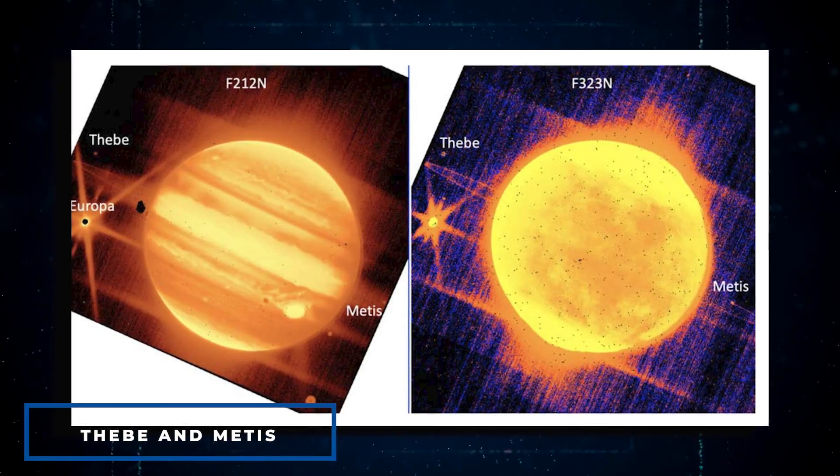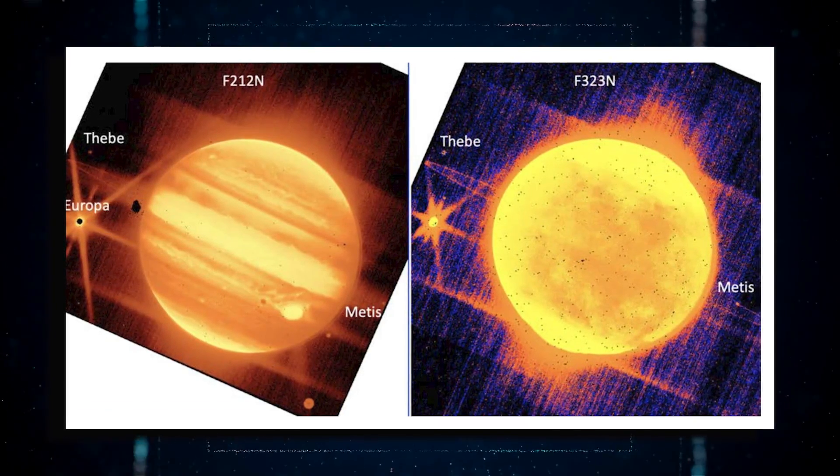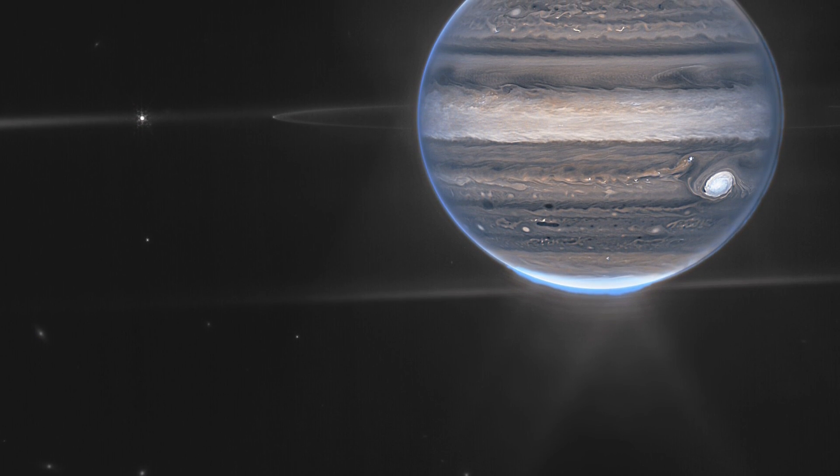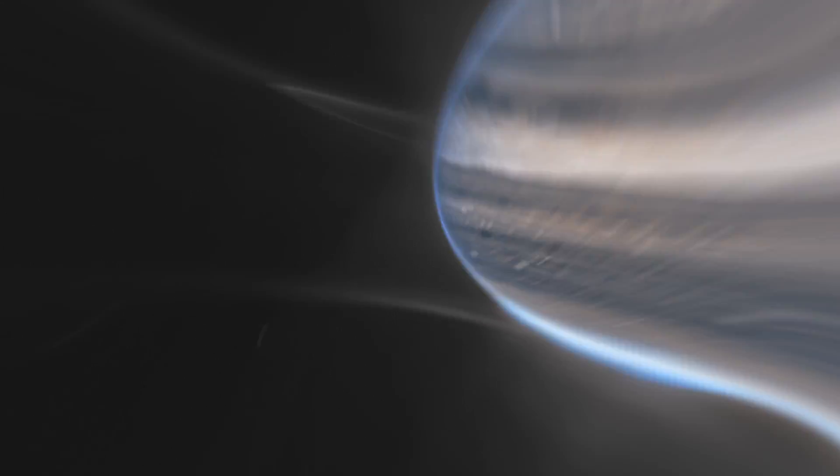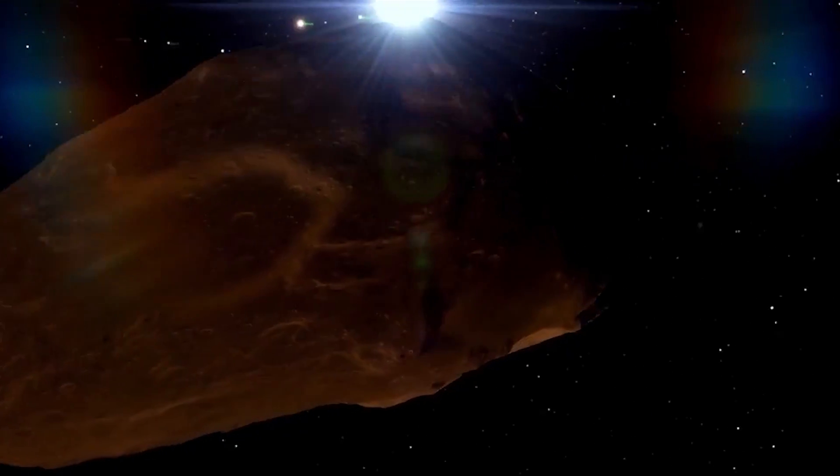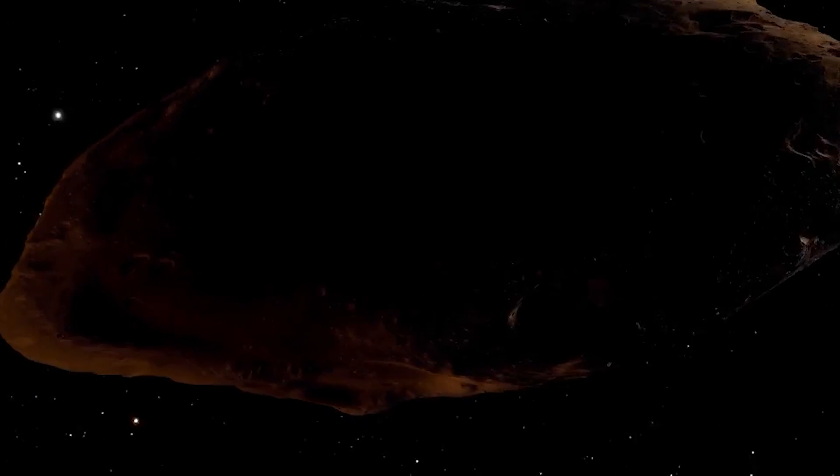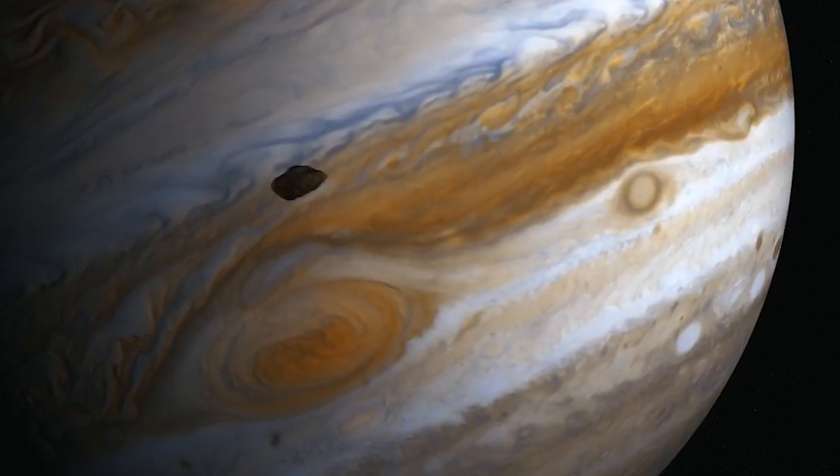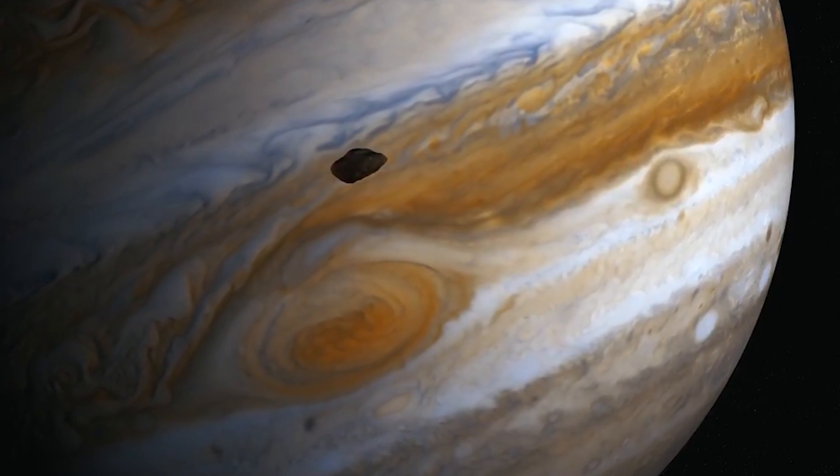Thebe and Metis can also be seen on Jupiter in recent pictures. Images of Jupiter shot using narrowband filters give breathtaking views of the planet's whole disk. The availability of extra information on extremely faint objects - Metis, Thebe, the main ring, and hazes in those photographs with around one-minute exposures was a very unexpected surprise.